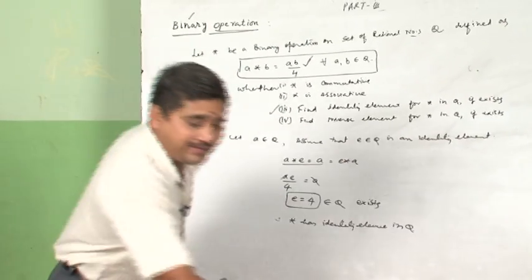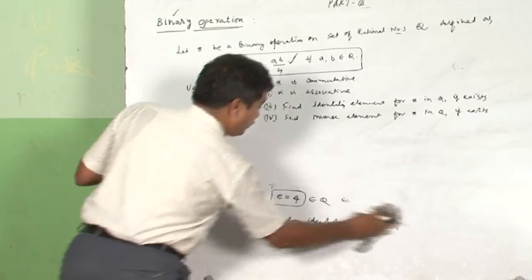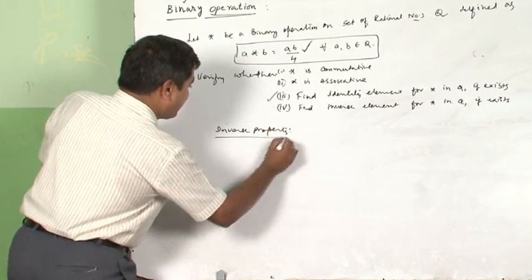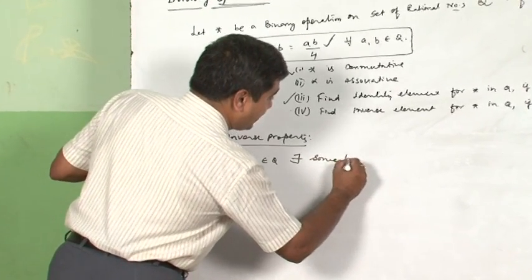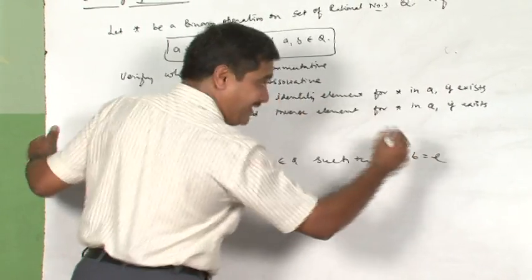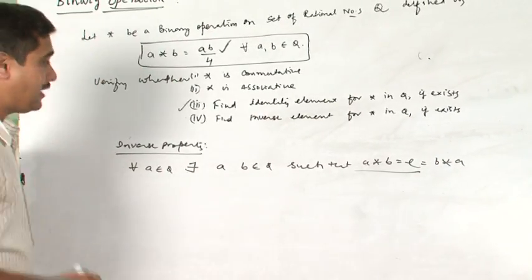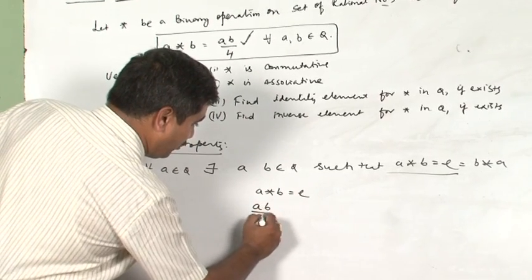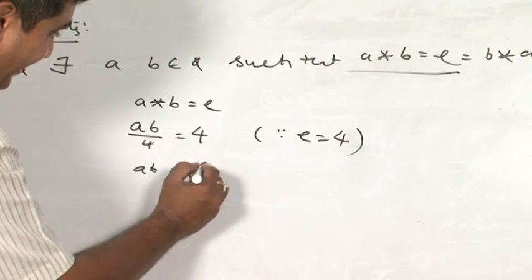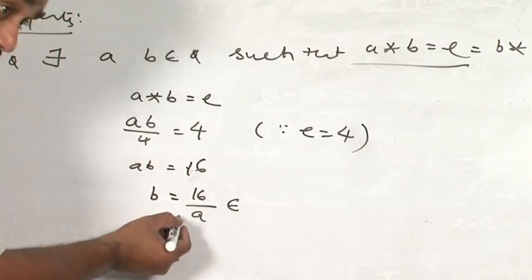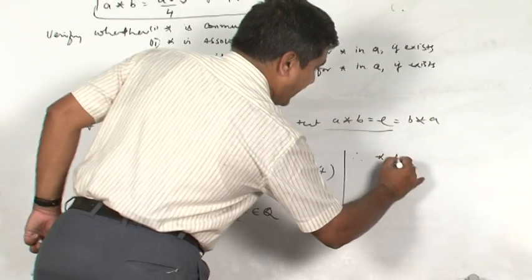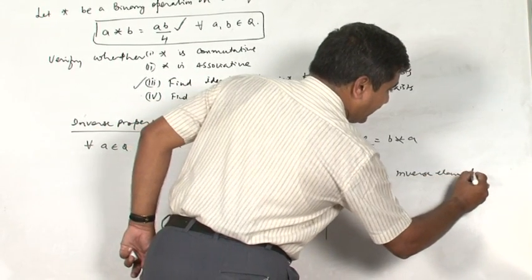For the inverse property: for every A in Q, there exists B in Q such that A★B = E = B★A. Setting A★B = E: AB/4 = 4, so AB = 16, giving B = 16/A. Since A is a non-zero rational number, 16/A is also a rational number belonging to Q. Therefore, star has an inverse element in Q.